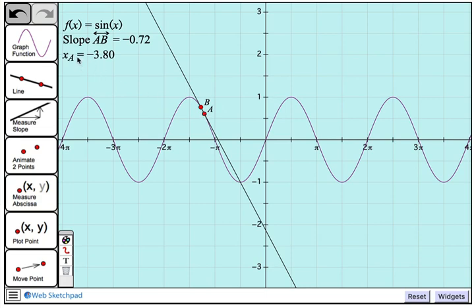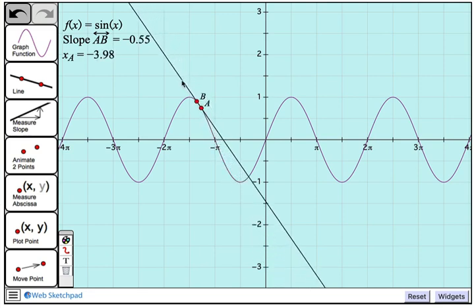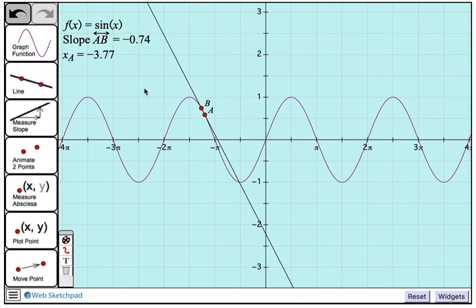So here we see the x value of point A, and that value changes as we drag the line. Now, what I'd like to do is plot the point whose x value is the x value of point A, and whose y value is the slope of AB.